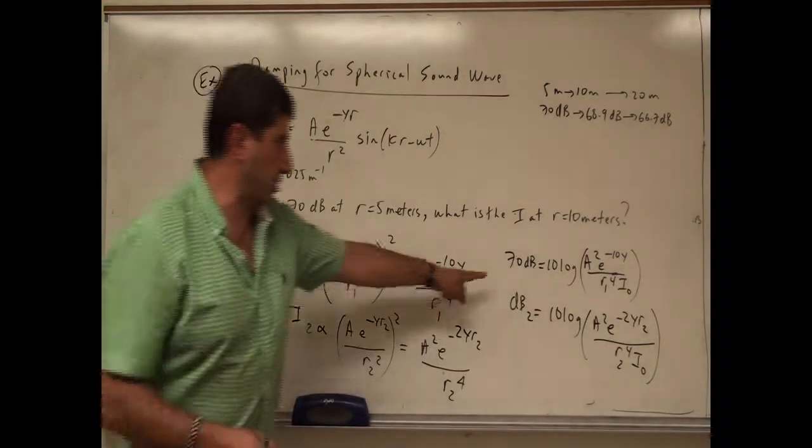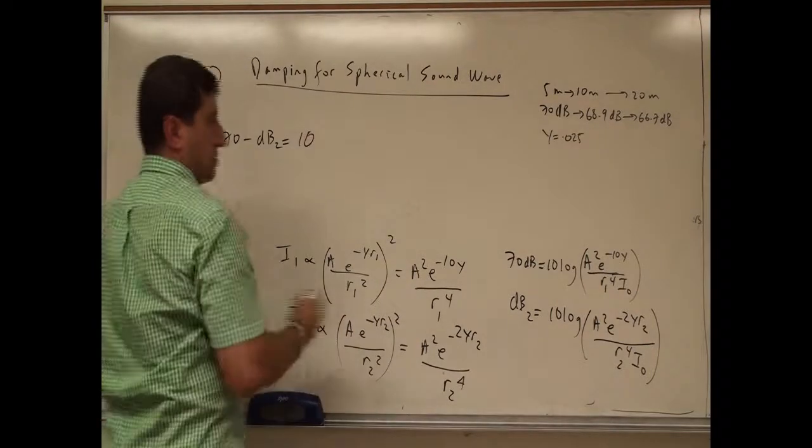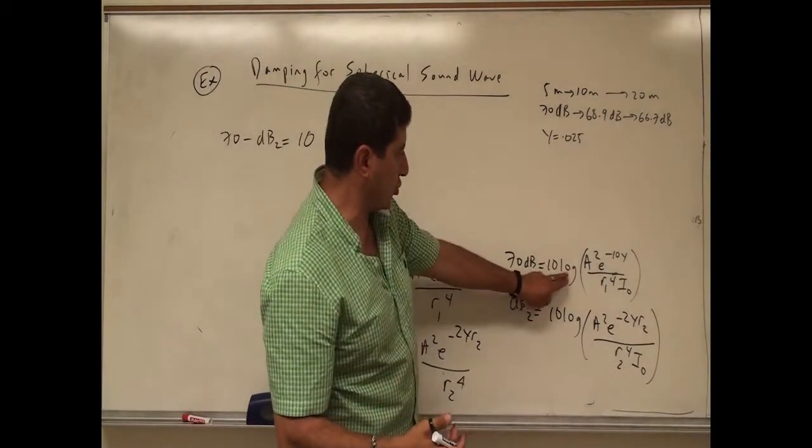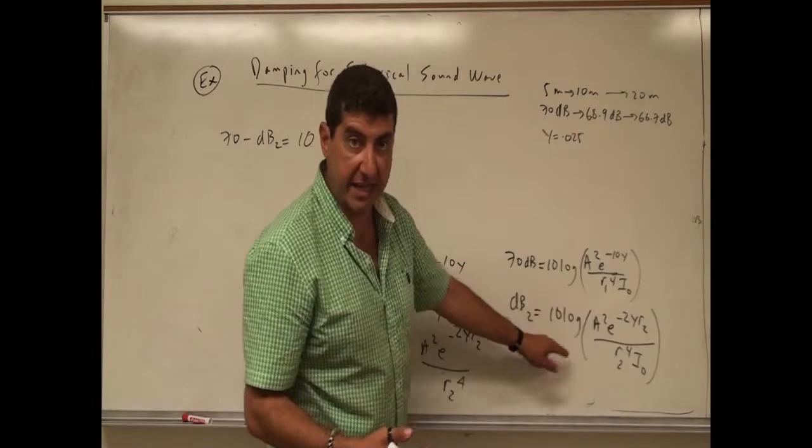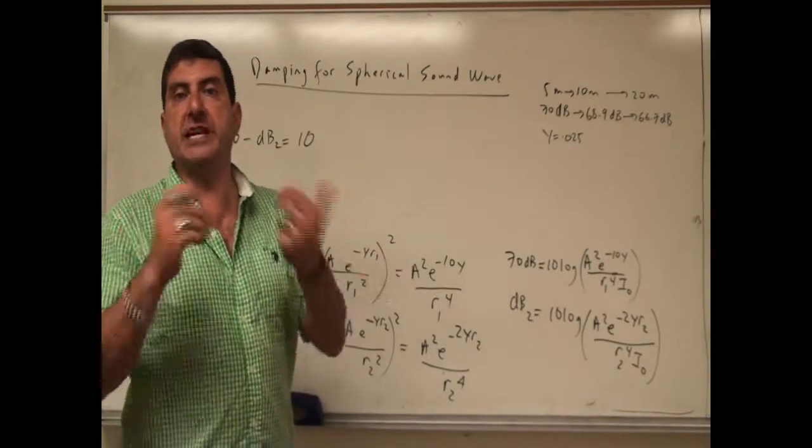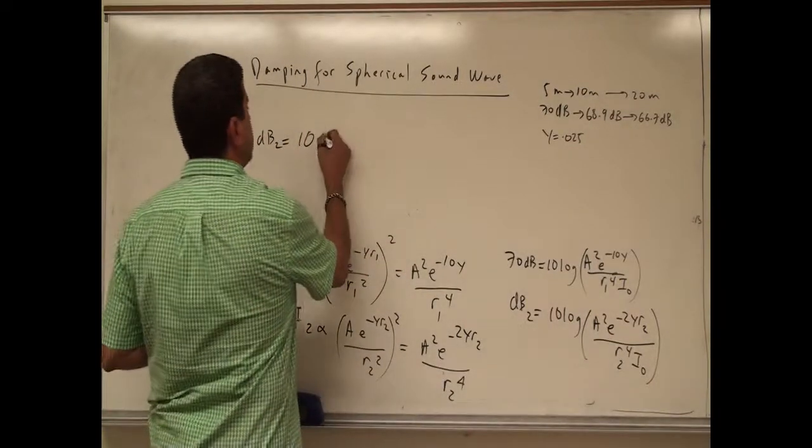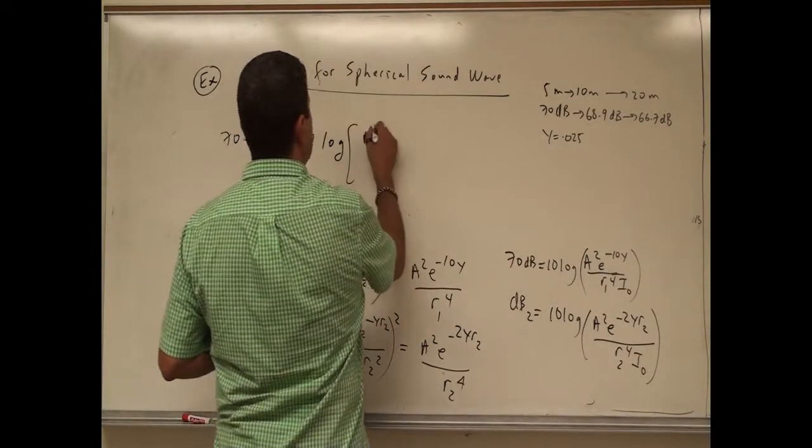Then we're going to do a very similar. I'm going to subtract 70 minus db2. And I'm going to do it kind of quicker now. I can just do log this log minus this log, or just take the logs and add them. And remember adding log of A plus log of B is the same thing as multiplying them.